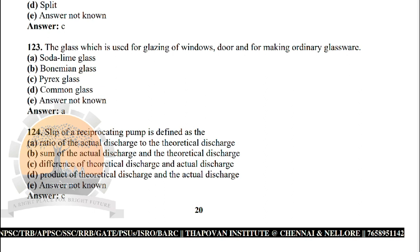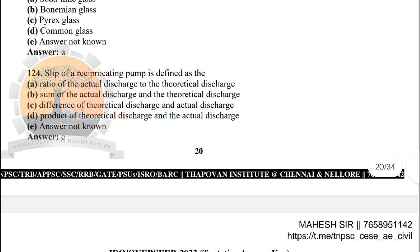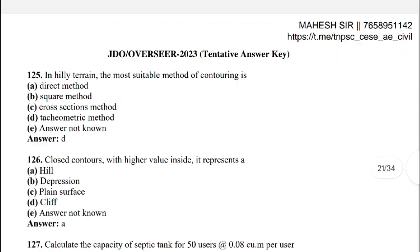Next: when a piece of timber has a spirally distorted grain along its length, it is known as — the correct answer is option C: twist. Next: the glass used for glazing of windows, doors and making ordinary glassware — the correct answer is option A: soda-lime glass.